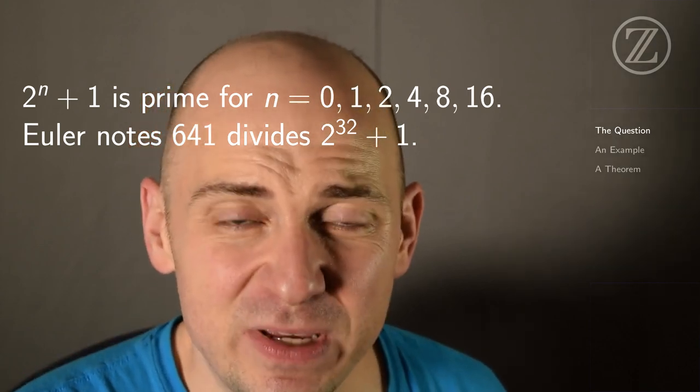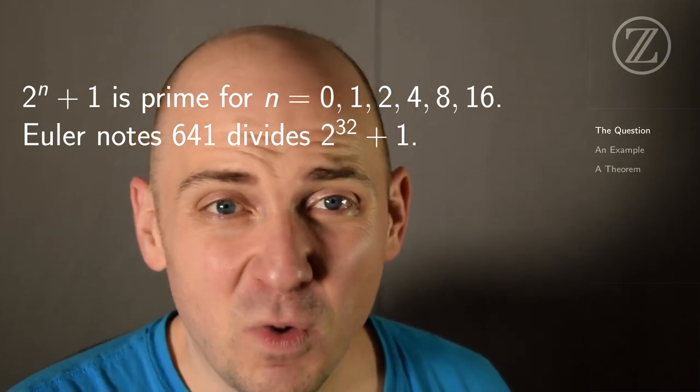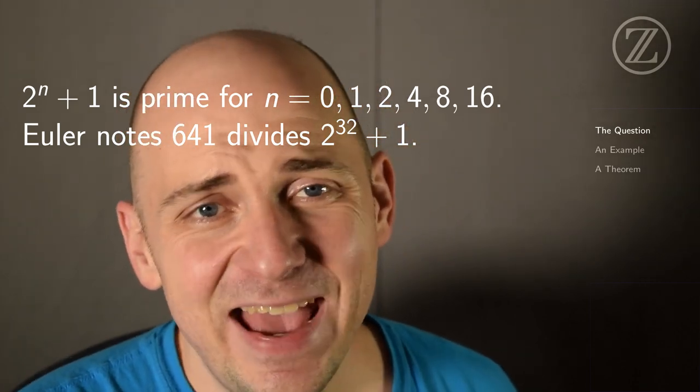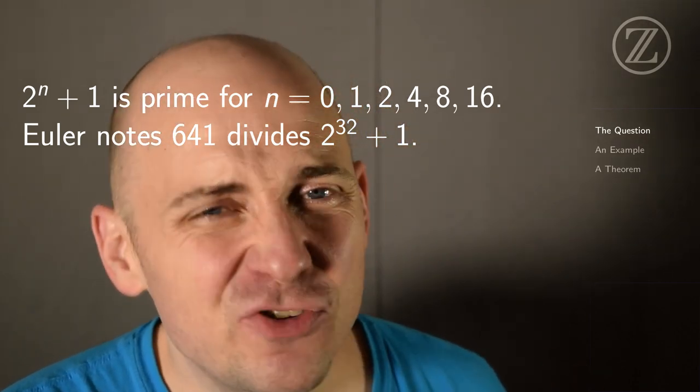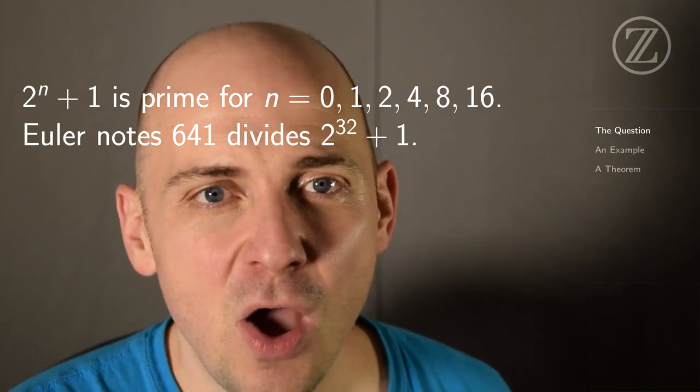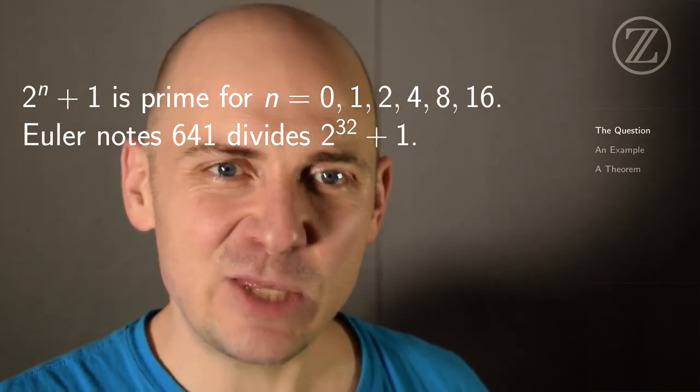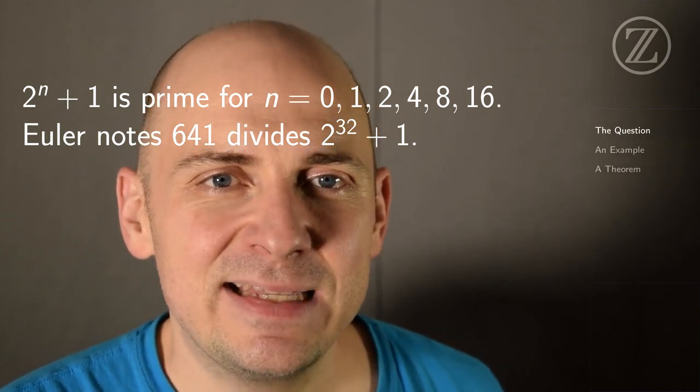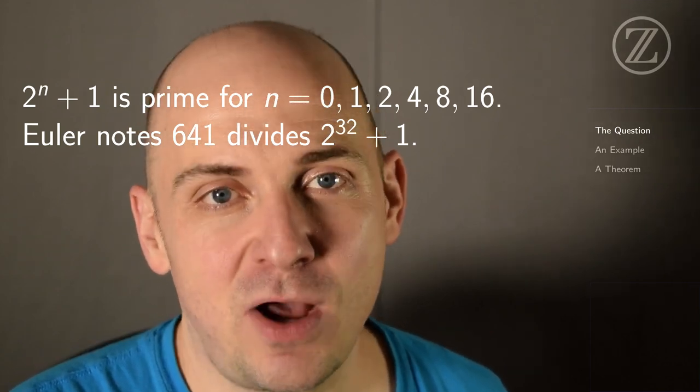So at this point in human history in 2020, it's not known what other choices of n you could make so that 2 to the n plus 1 is prime. And if you're confronted with a challenging problem, one thing to do is to make the problem a little different and see if you can make some progress. So let's tweak this problem a little bit and see if we can solve our tweaked problem.